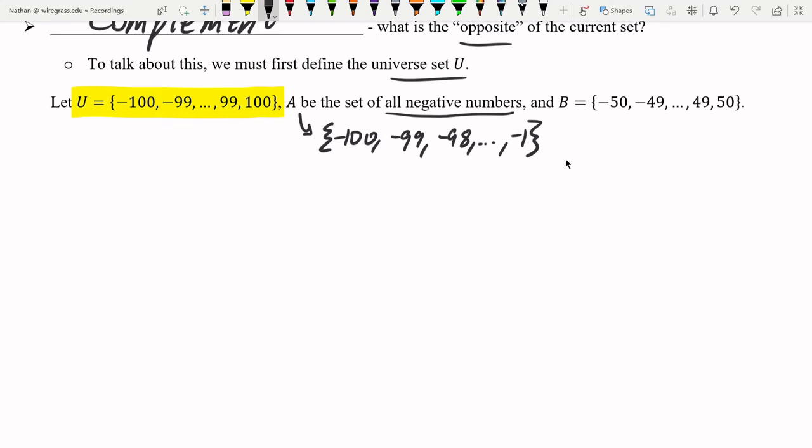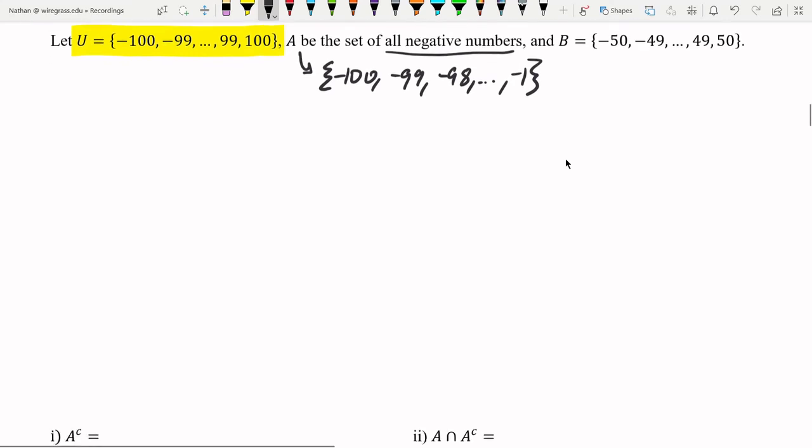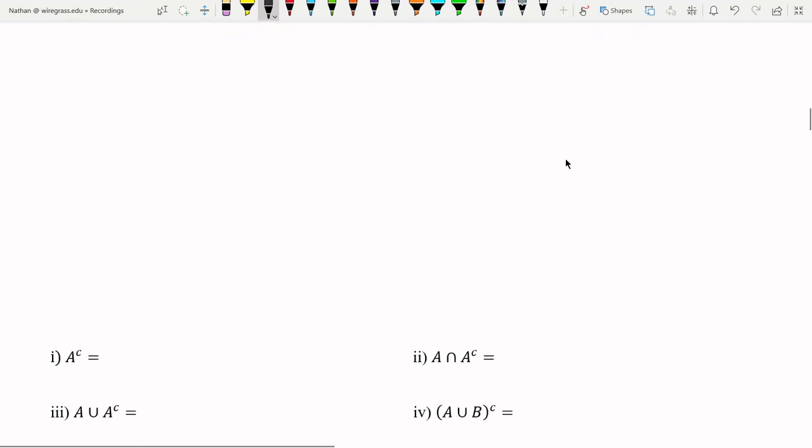Of course, B is negative 50 to positive 50. And with that in mind, we can look at these four operations.